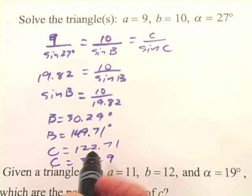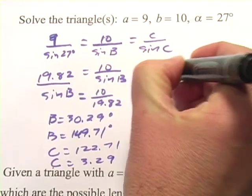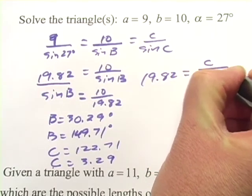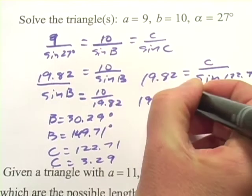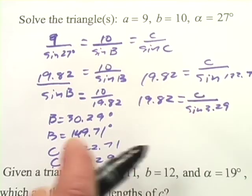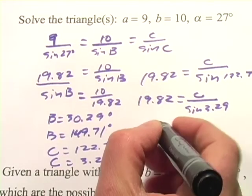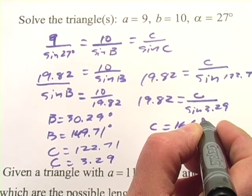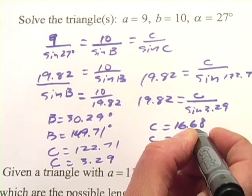So let's go ahead and try to calculate that. We've got this number here, 19.82, equals C over—well, we'll try sine of 122.71, and we'll also do the same thing for the other angle, 3.29. And what we get when we punch those through, we get C equals 16.68, and C equals 1.14.